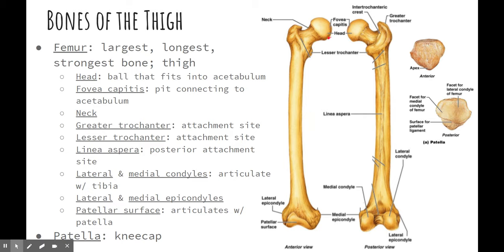Right here you see the head of the femur. That's what actually fits into the acetabulum of the pelvis. You have here the fovea capitis — it's a little notch, a little pit in the head that has a ligament connecting the femur head into the acetabulum.